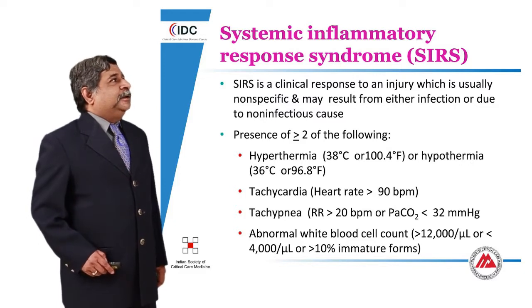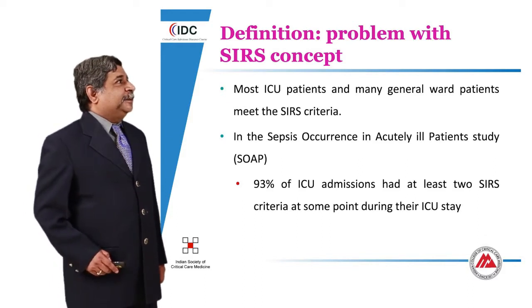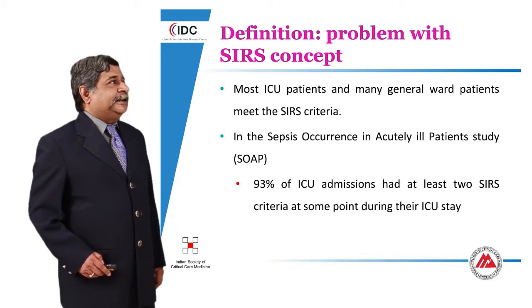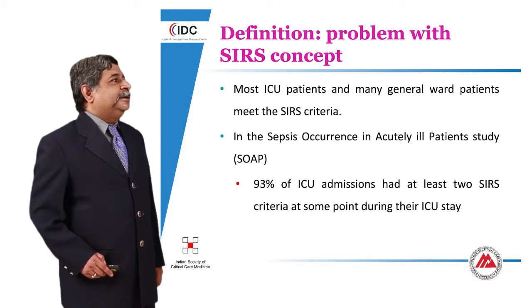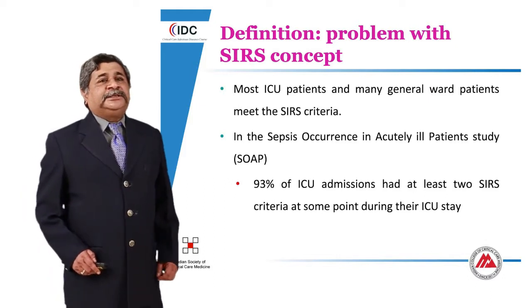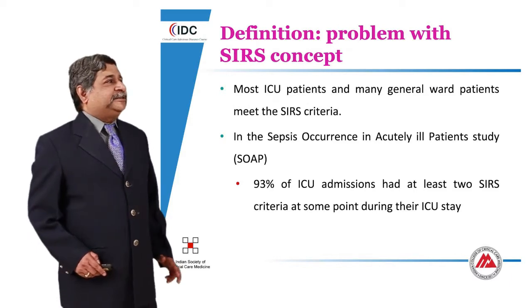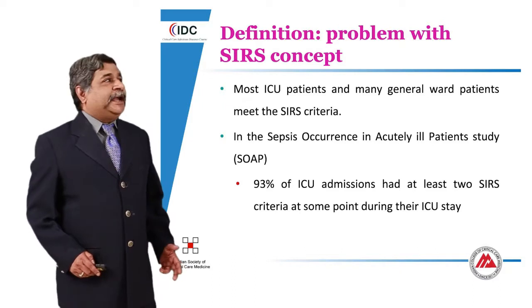Previously the SIRS criteria were used to define sepsis, but the problem with the SIRS concept was that most ICU patients and many general ward patients meet the SIRS criteria. In the SIRS occurrence in acuity in patients study, 93 percent of ICU admissions had at least two SIRS criteria at some point during their ICU stay. This essentially means that if you use the SIRS concept to define sepsis or severe sepsis and septic shock, you are likely to over-diagnose it and misuse antibiotics.